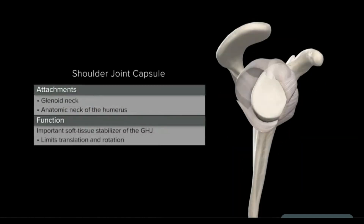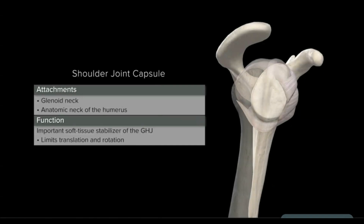In the mid-ranges of motion, such as normal everyday activities, the glenohumeral ligaments and joint capsule are in a lax state, therefore not contributing significantly to joint stability. However, in the extremes of motion, the glenohumeral ligaments tighten according to specific arm position and control humeral head translation to provide stability.